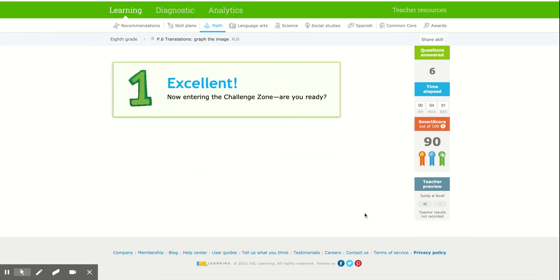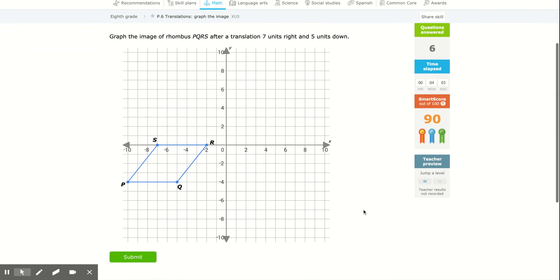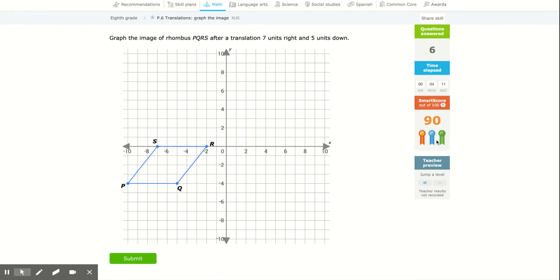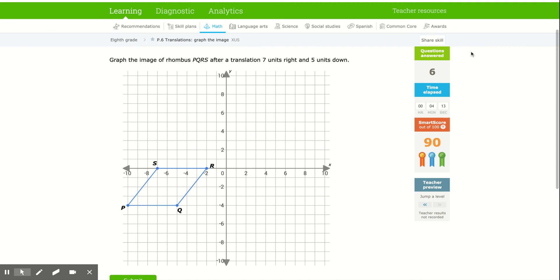Again, hopefully, you know your right from your left, unlike me. And you can do 7 units right, 5 units down. If you have any questions on this assignment, please ask Mrs. Smith. As she knows her right from her left better than I do.